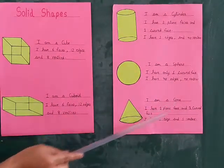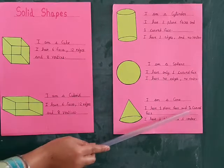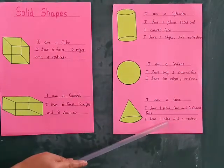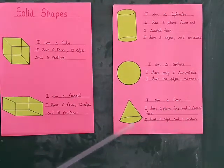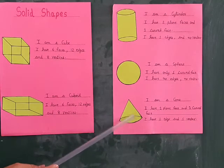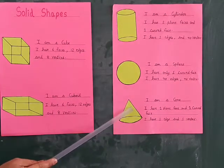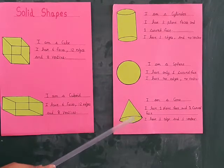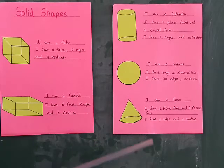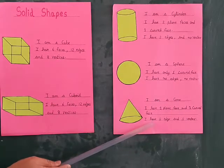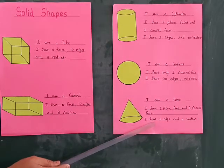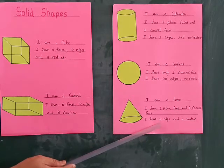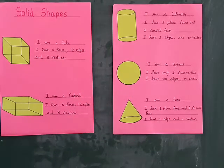I am a cone. I have 1 plain face and 1 curved face. I have 1 edge and 1 vertex. It has 1 plain face and 1 curved face. This is a triangle and this is a circle.